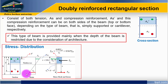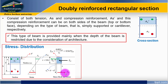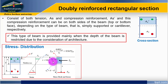The stress distribution in a doubly reinforced rectangular section has As at the tension zone and As prime at the compression zone. The stress block is present, FST is the tensile force in the steel, FCC is the compressive force in the concrete, and there is also the compressive force in the compression steel at the compression zone.